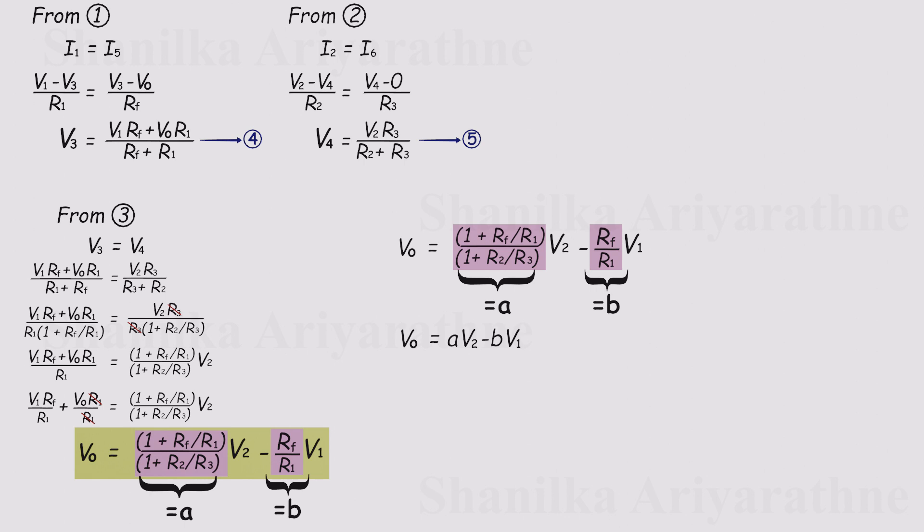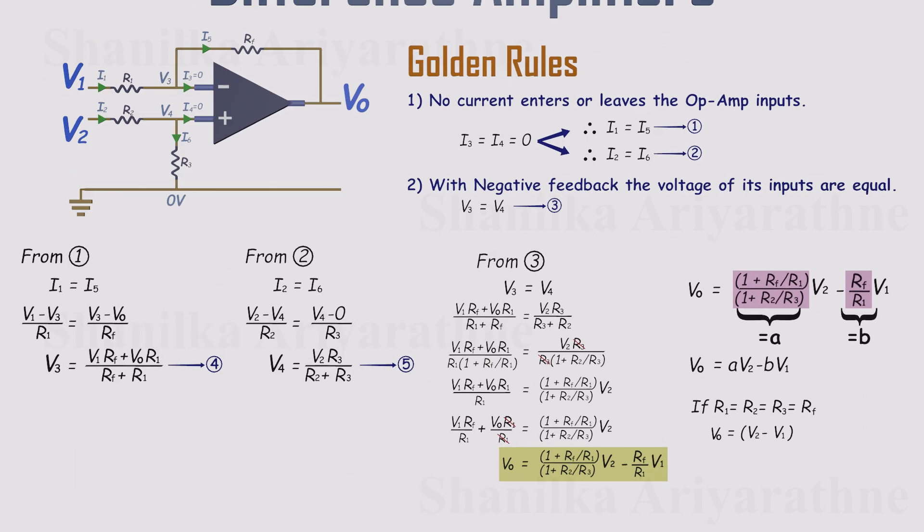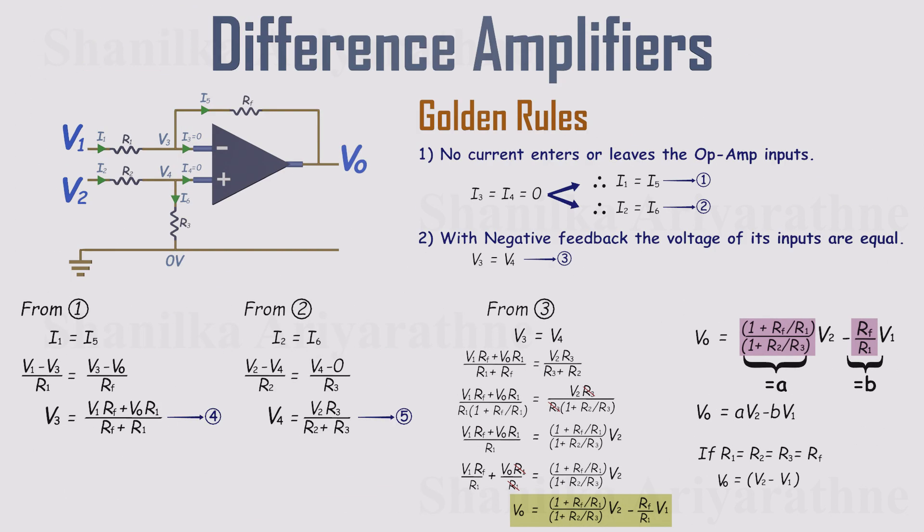And here's a quick gut check. If all the relevant resistors are equal, the non-inverting path gives A equals 1, and the inverting path gives B equals 1. So V out equals V2 minus V1, the pure subtractor. That's the heart of the difference amplifier, an op-amp using a few resistor ratios to do real-time math. No code, no clocks, just physics.